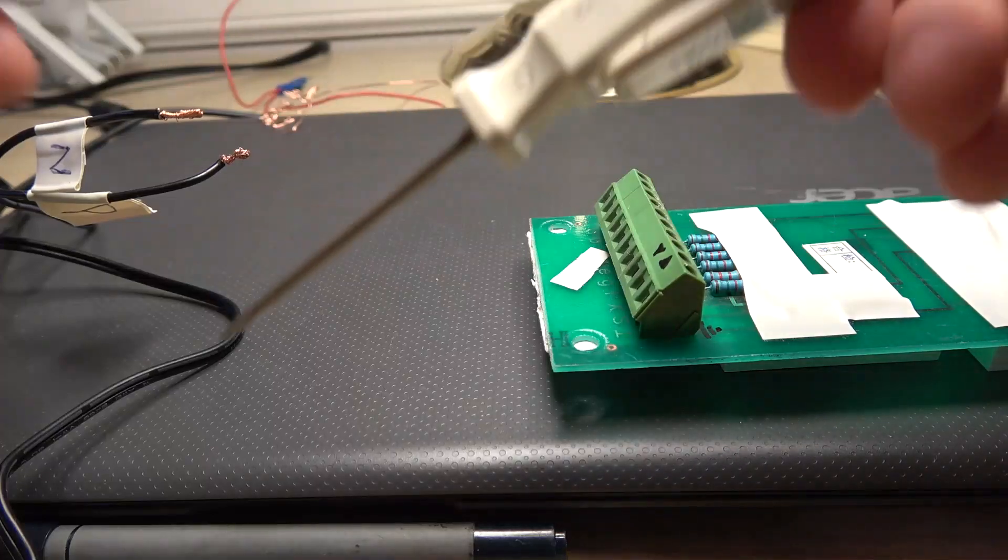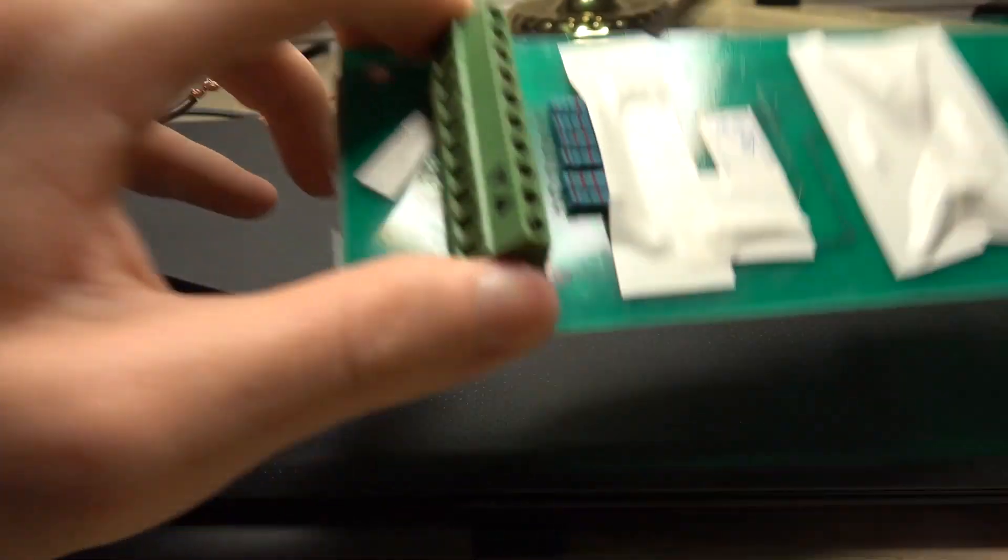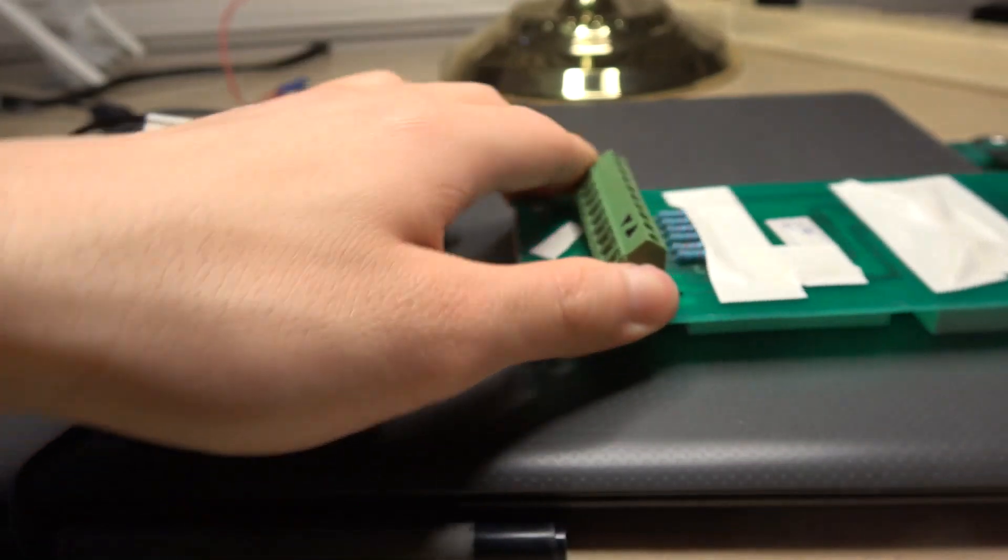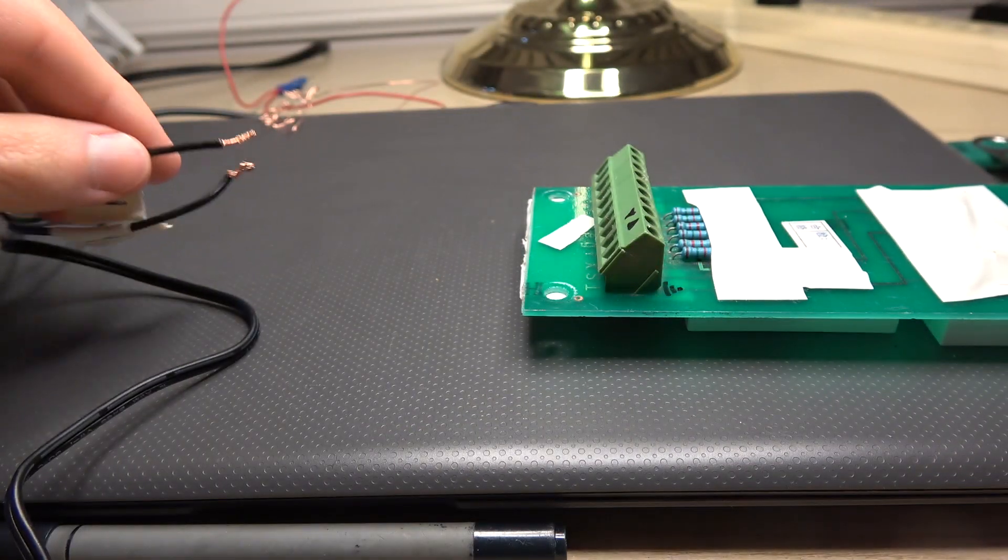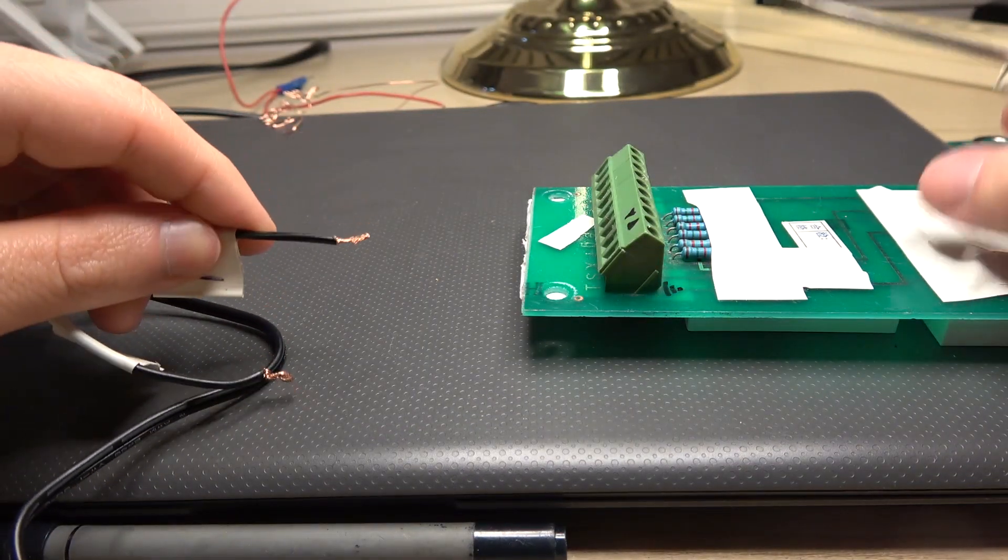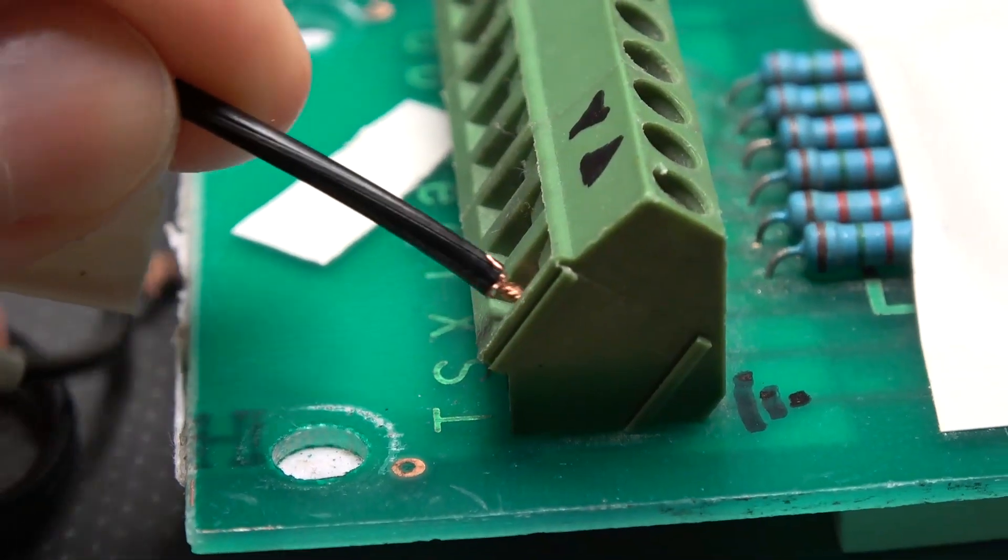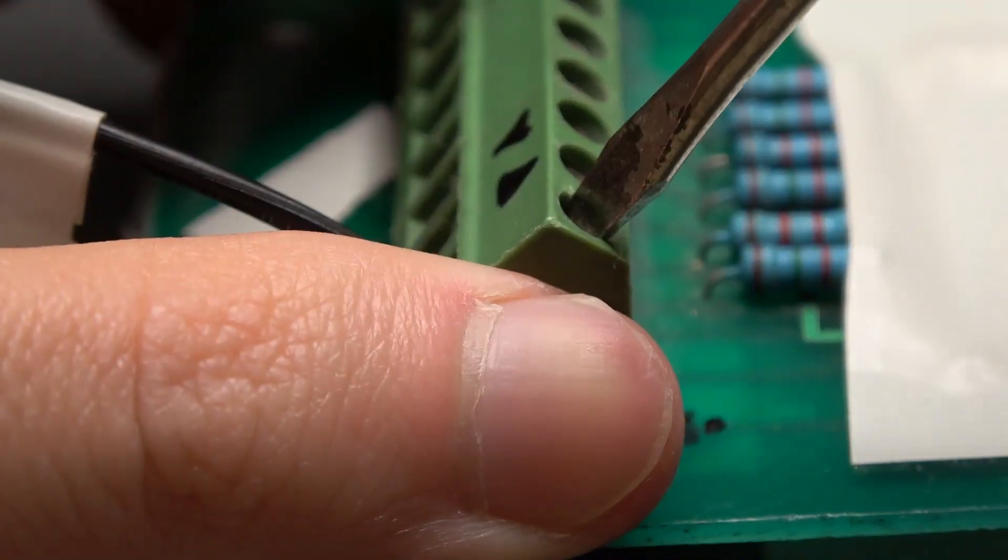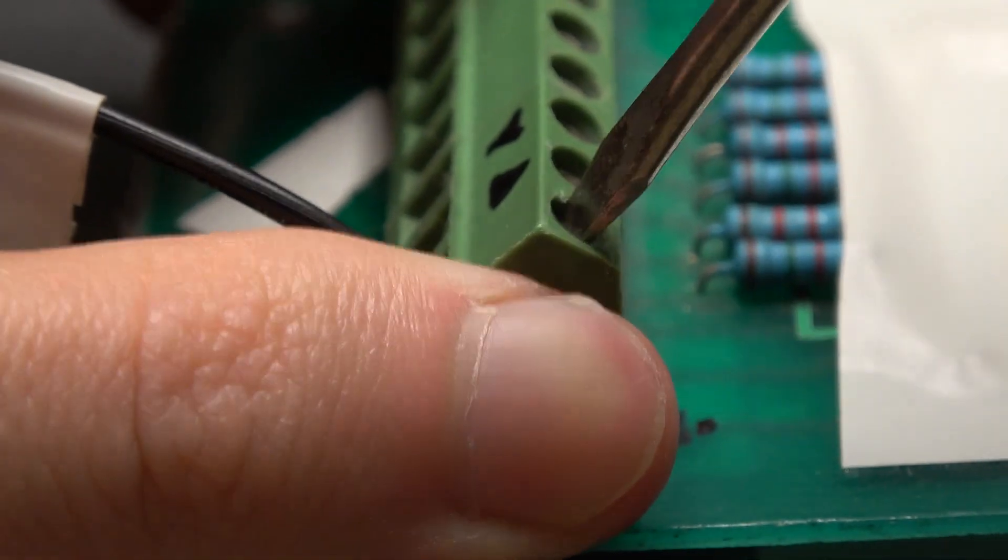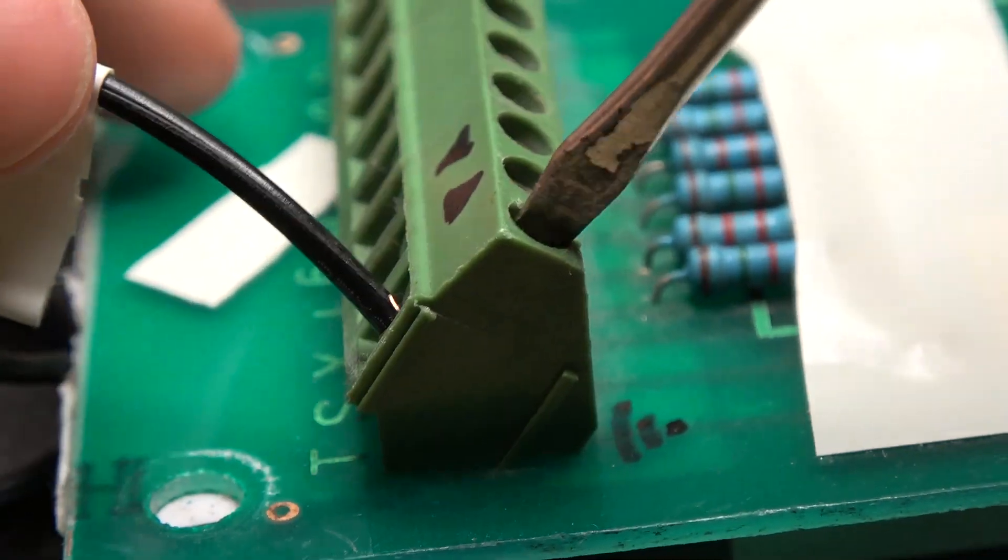All right, so what you're going to need is a screwdriver that fits into these holes where the screws are. And you're going to first take your negative wire and place it inside here, and we're going to tie it up. Make sure that it is in.